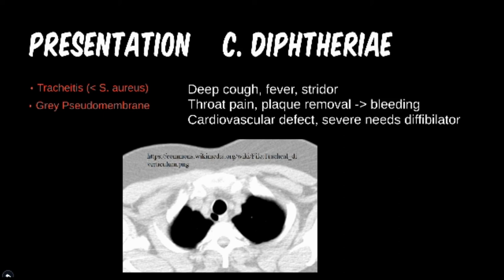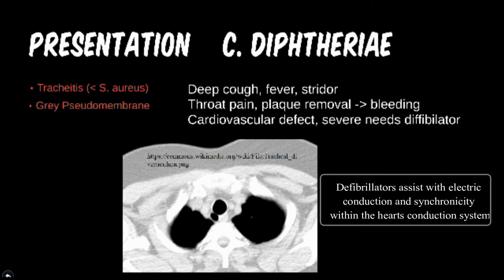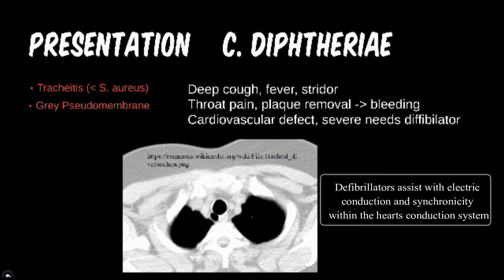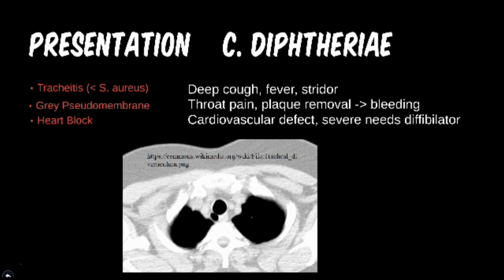Lastly, we have the only other cardiac presentation for this module. Severe presentations of this particular cardiac defect may require a defibrillator. Even if you don't remember the exact name of this defect, the defibrillator clue suggests it has to do with electrical conduction. This particular disease is called a heart block, and can be caused by diphtheria or Lyme disease.